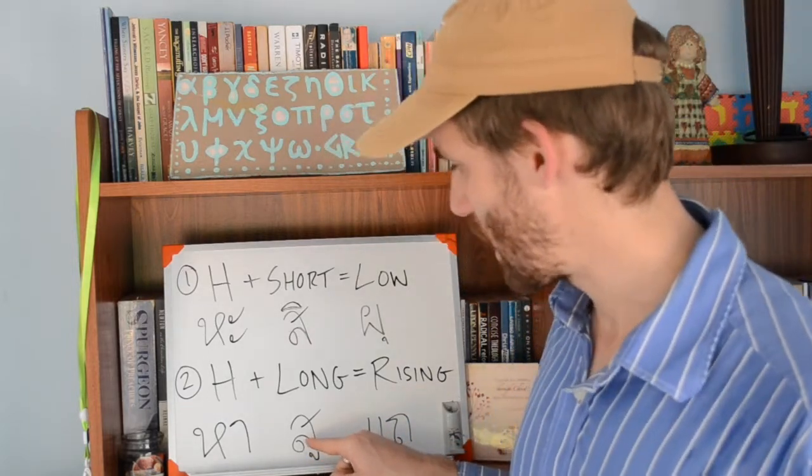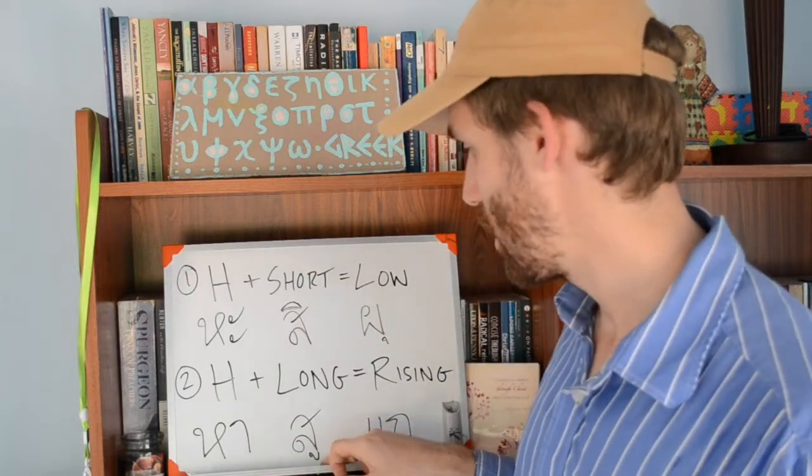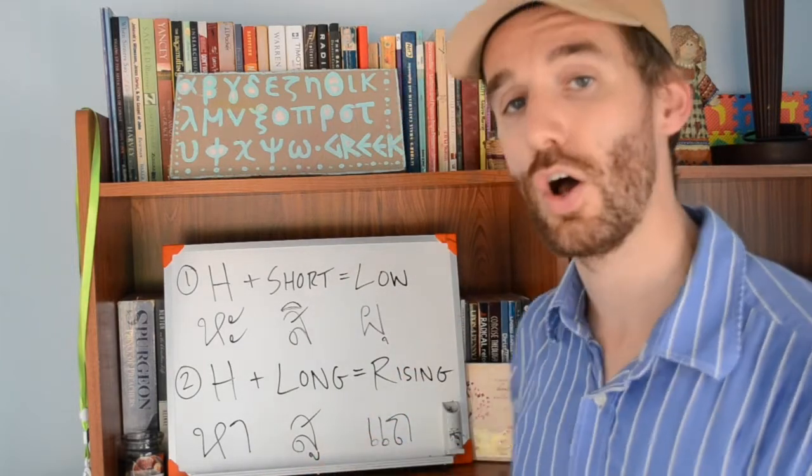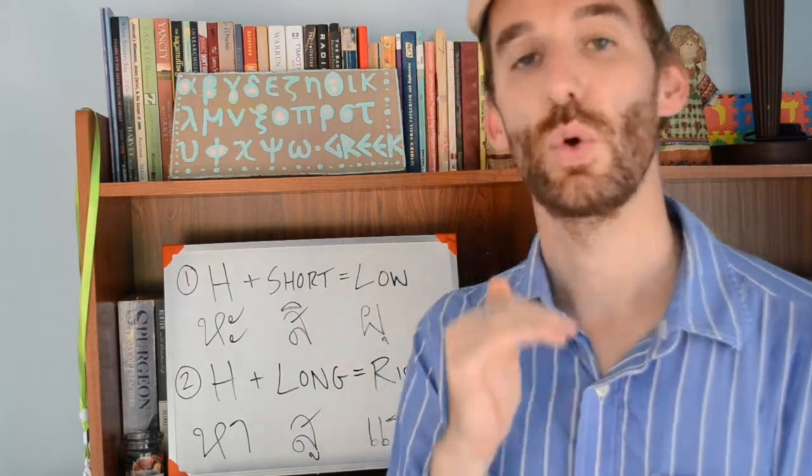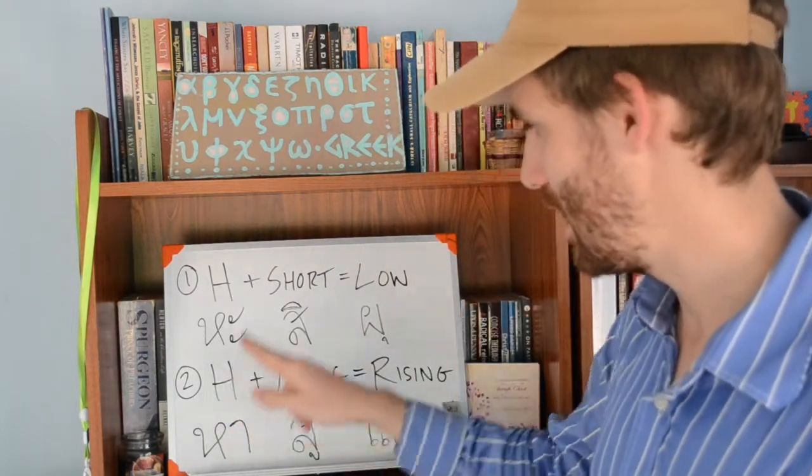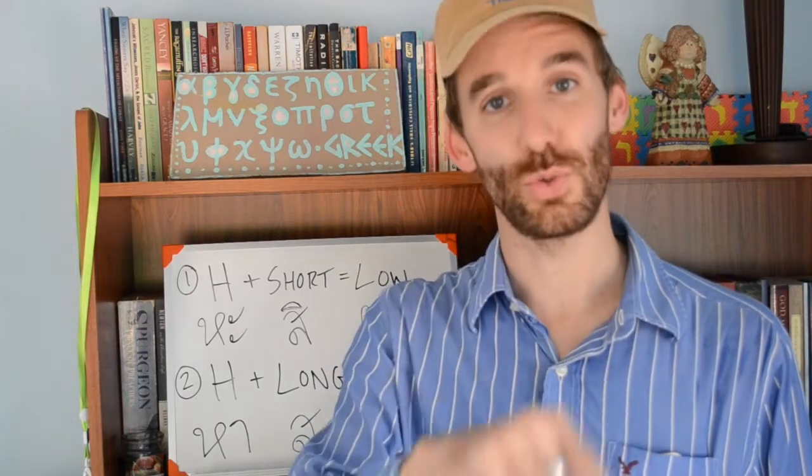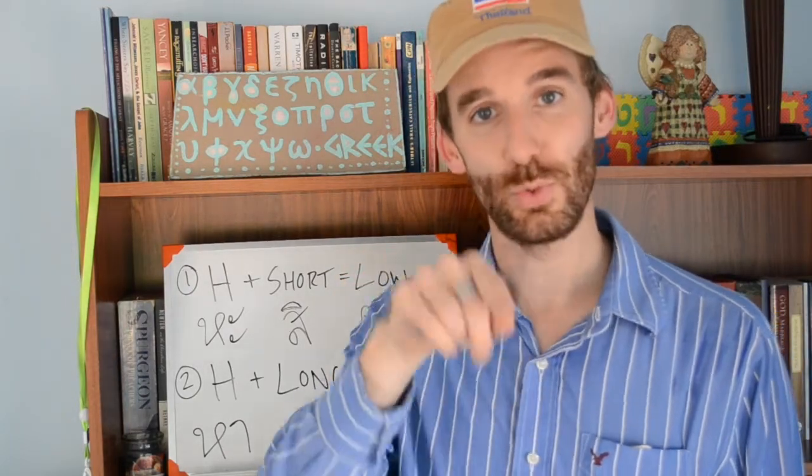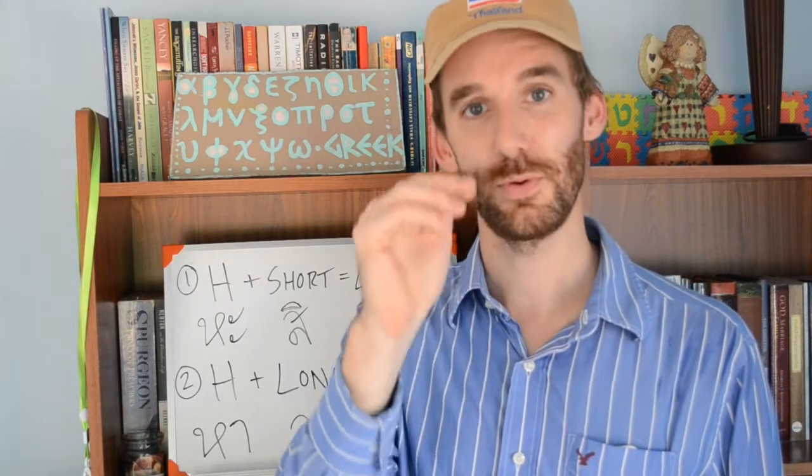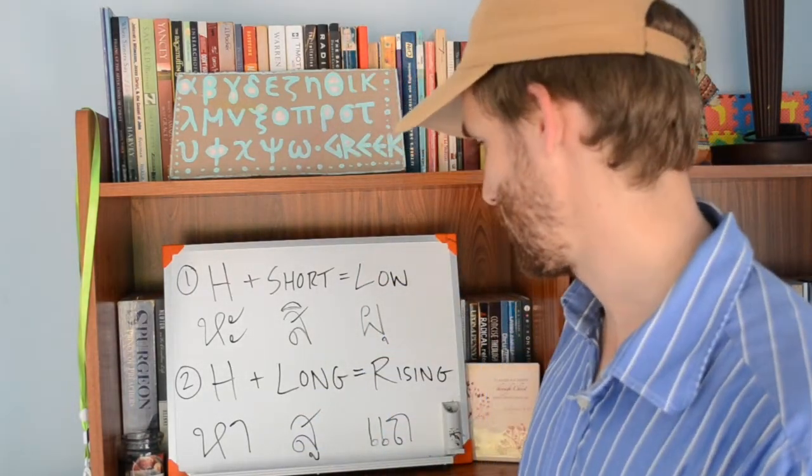Look at the second one here. We have the letter SA SUA with a long OO sound. Hold that out, draw that out. High class plus a long vowel is going to be a long rising tone. SUA. Make sure you dip it down.